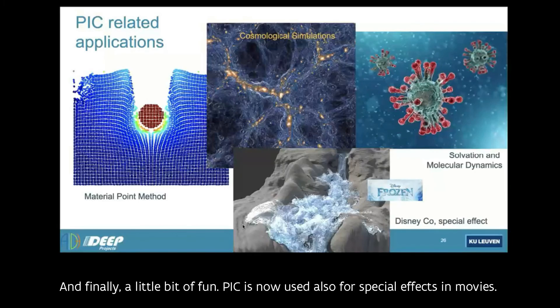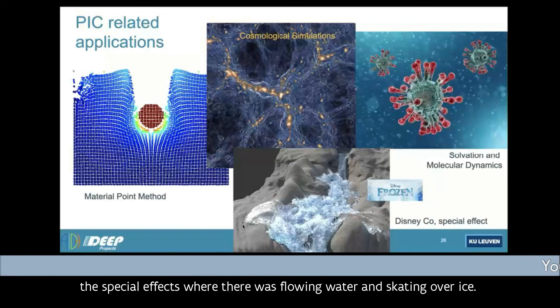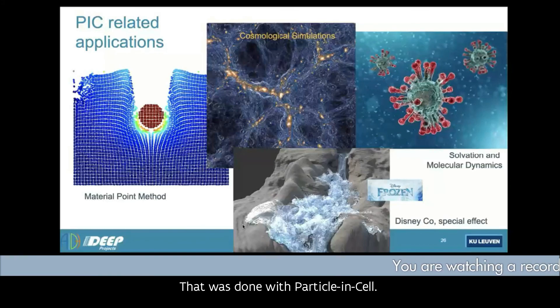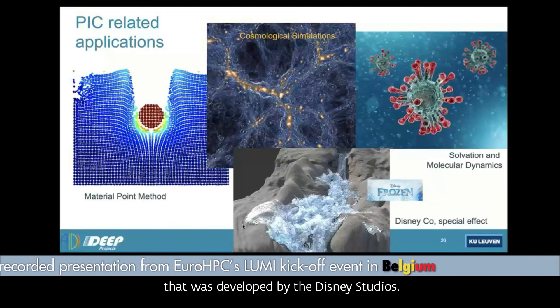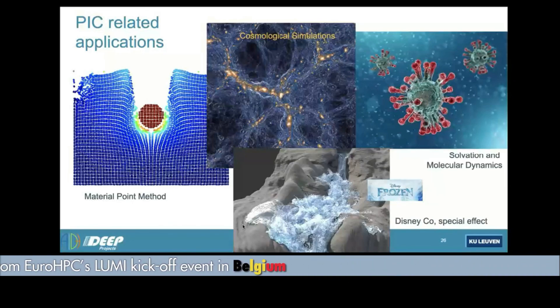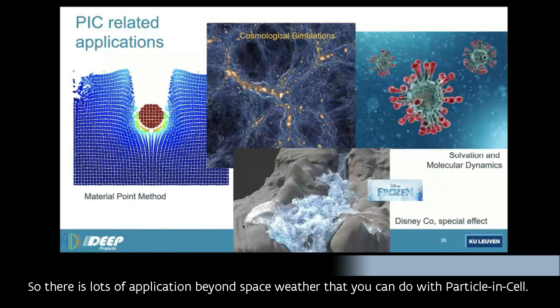And finally, a little bit of fun. PIC is now used also for special effects in movies. If you look at the movie Frozen, the special effects where there was flowing water and skating over ice, that was done with particle in cell. There is a special method called affine particle in cell method that was developed by the Disney Studios. So there are lots of applications beyond the space weather that you can do with particle in cell.